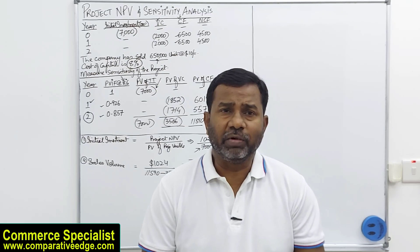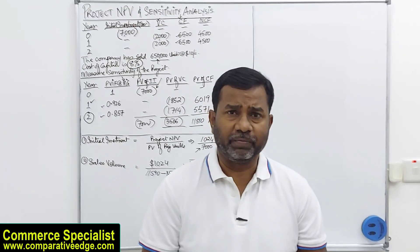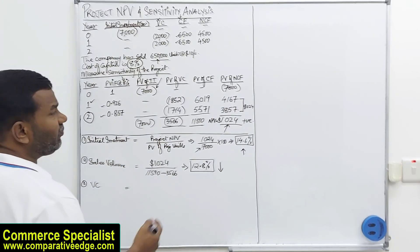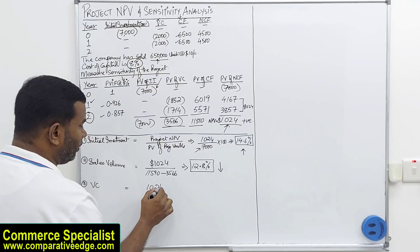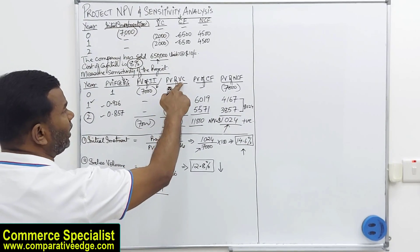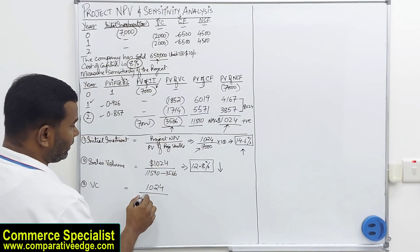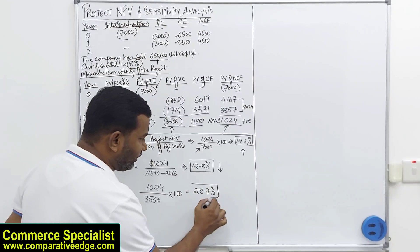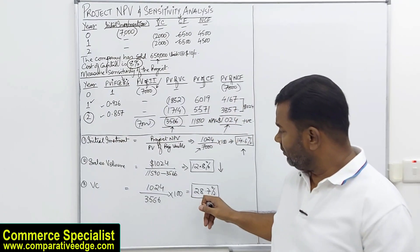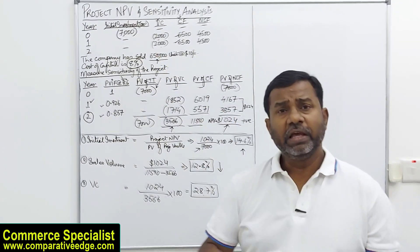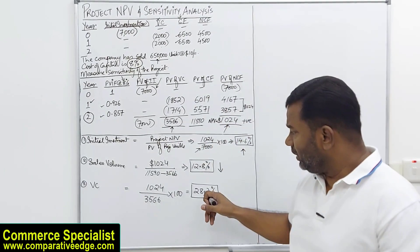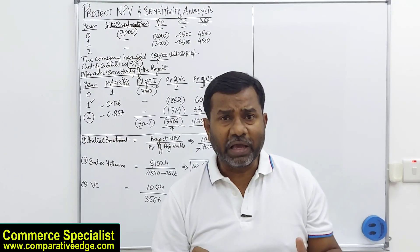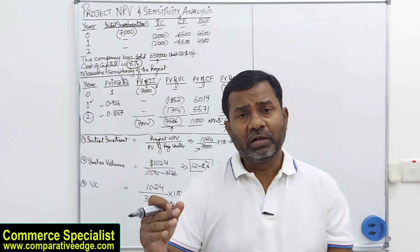Now let's look at variable cost. The sensitivity formula again uses NPV of 1,024 in the numerator, divided by the present value of variable cost, which is 3,566. So 1,024 ÷ 3,566 × 100 = 28.7%. This means: if the variable cost increases by 28.7% or more from the current 2,000, the NPV will turn negative and the project will not be feasible.